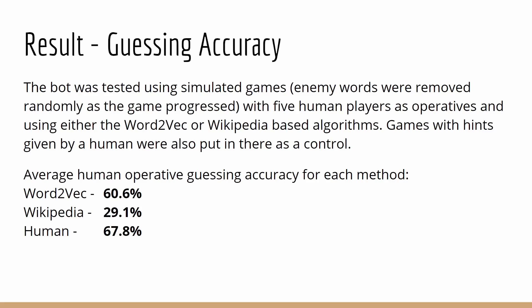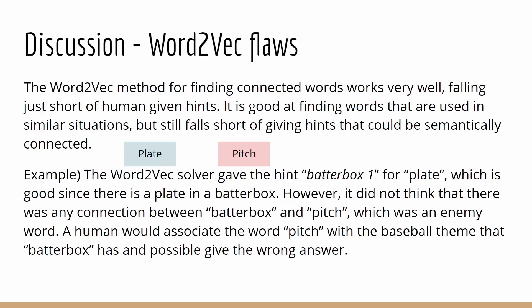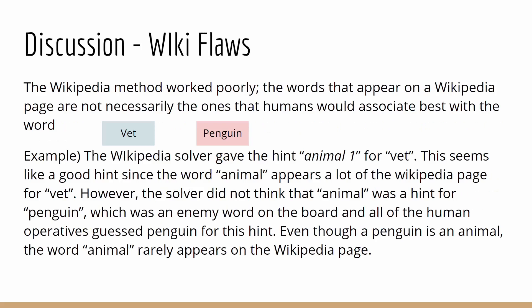For guessing accuracy, I tested the bot using several simulated games with five human players playing as operatives, and I used the word-to-vector model, the Wikipedia model, and also threw in hints that were given by a human as a control. Shown here is the average human operative guessing accuracy for each method. The human, unsurprisingly, is best, but the word-to-vector model does not fall too far behind. The word-to-vector model is very good at finding words that are used in similar situations, but still falls short of giving hints that could be semantically connected. The Wikipedia model was not very good — the words that appear on a Wikipedia page are not necessarily the ones that a human would associate best with the word.